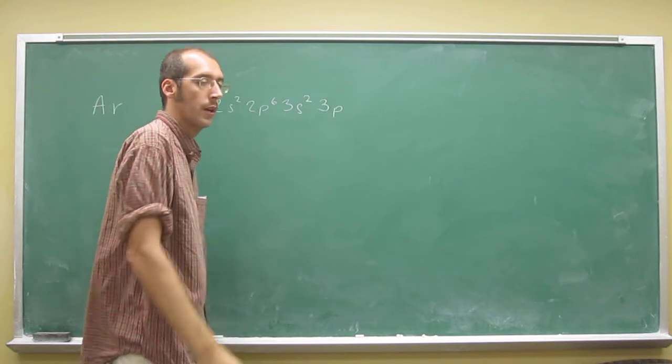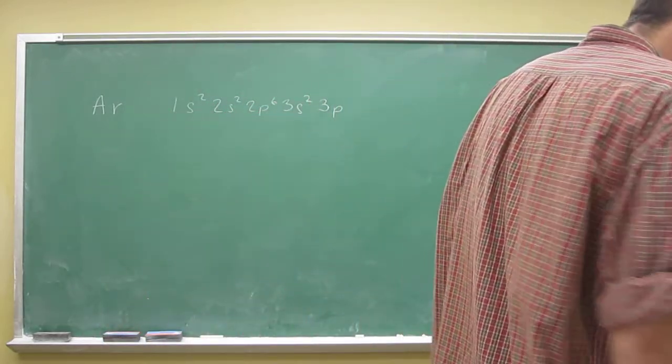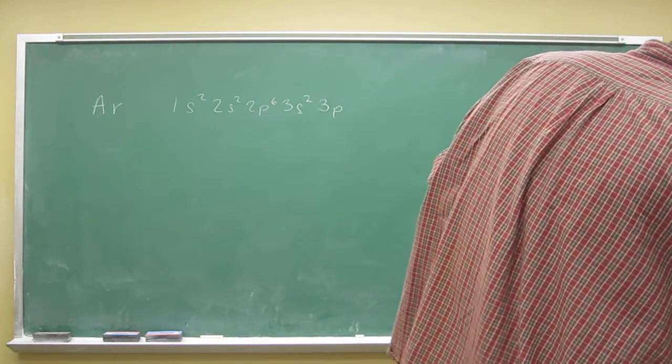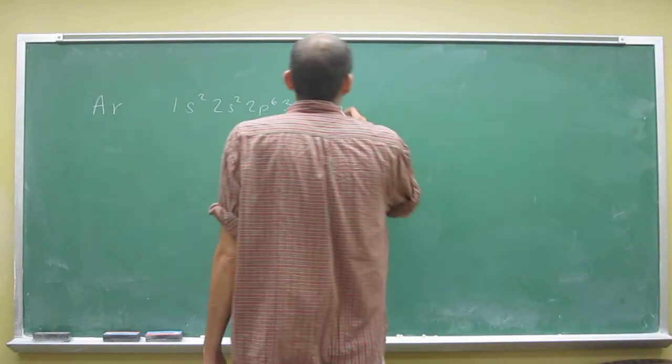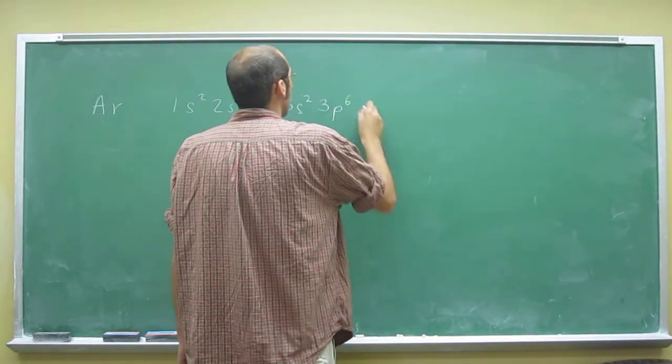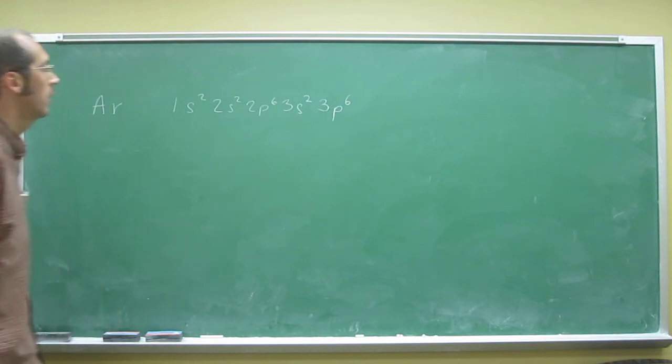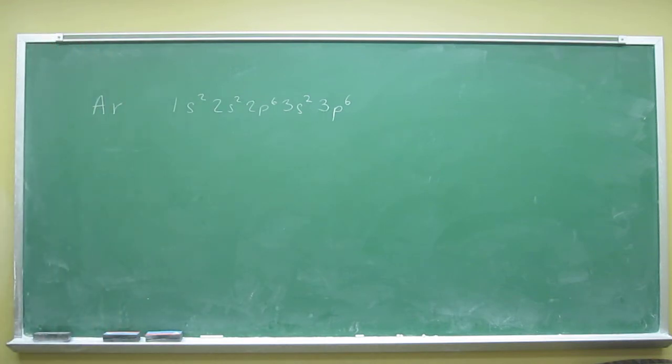So where's argon? So it's all the way on the end, right? So 1, 2, 3, 4, 5, 6. So it's got that p orbital, or those p orbitals filled as well, right?